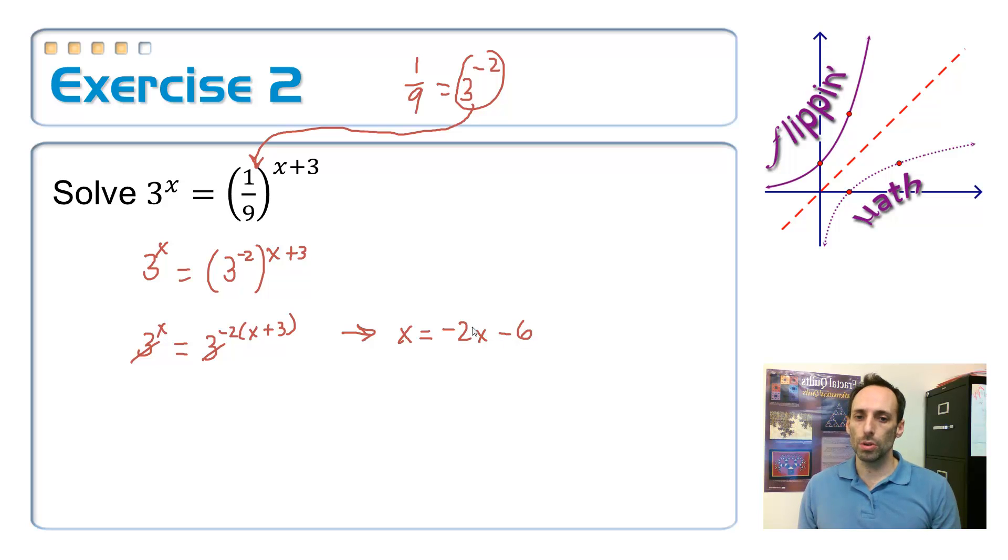Now, let's solve that very simple linear equation. Add the 2x's over and get 3x equals negative 6, so x equals negative 2, x equals negative 2.